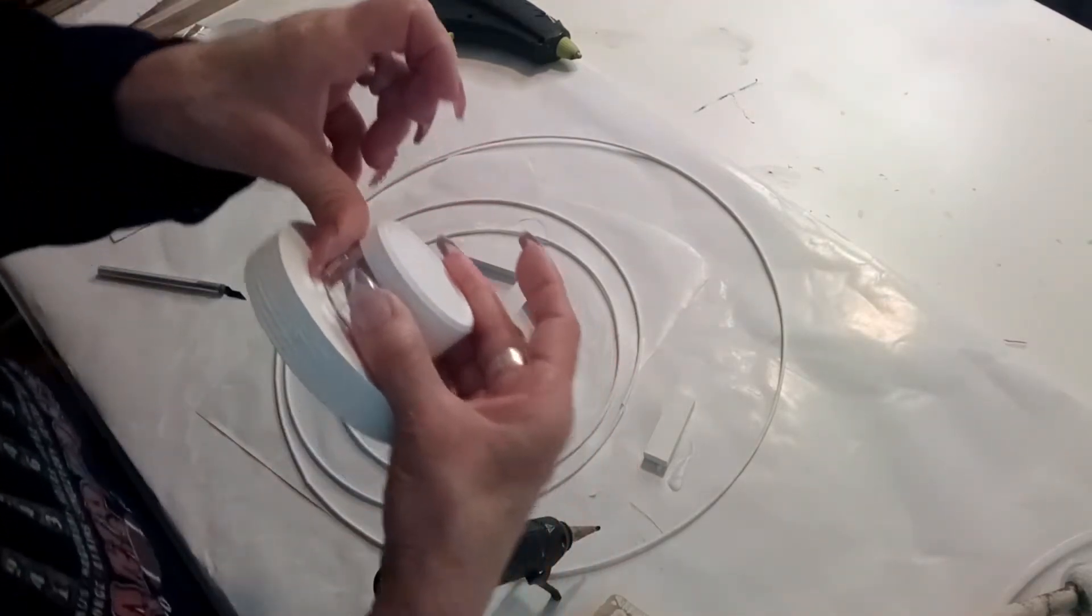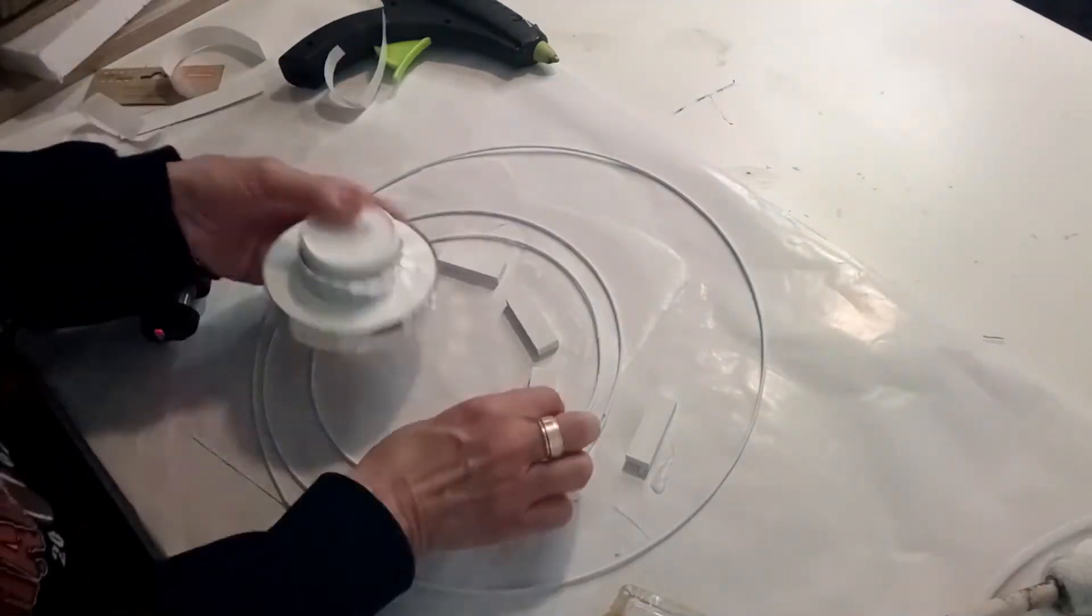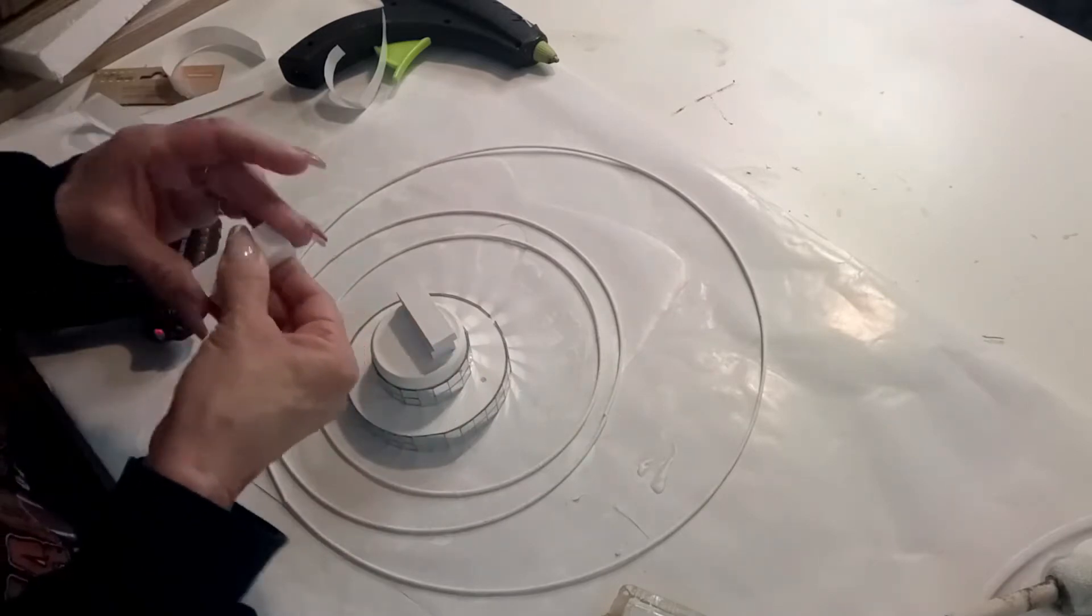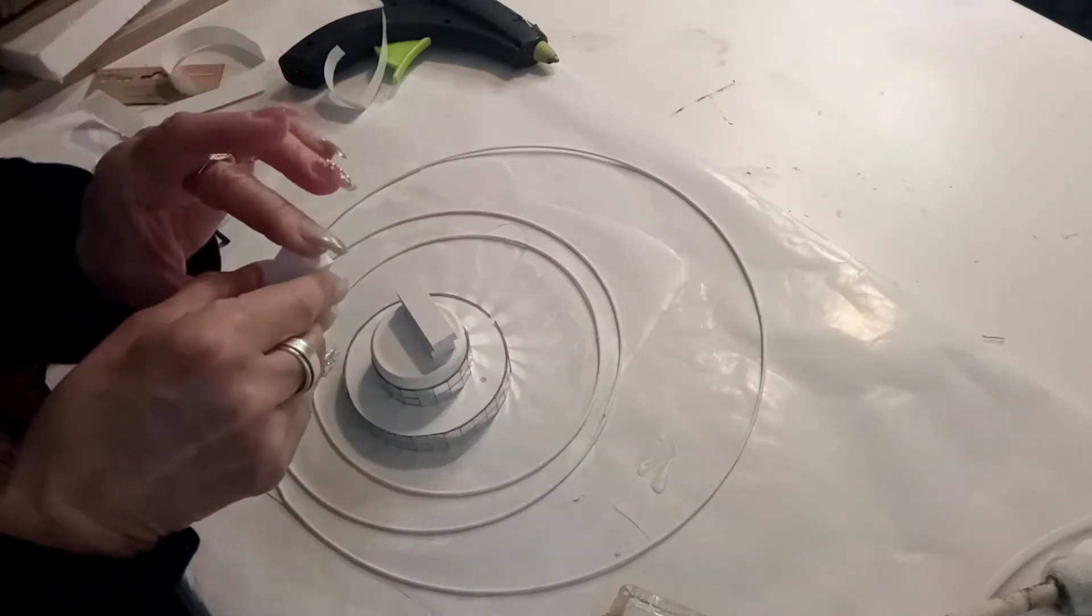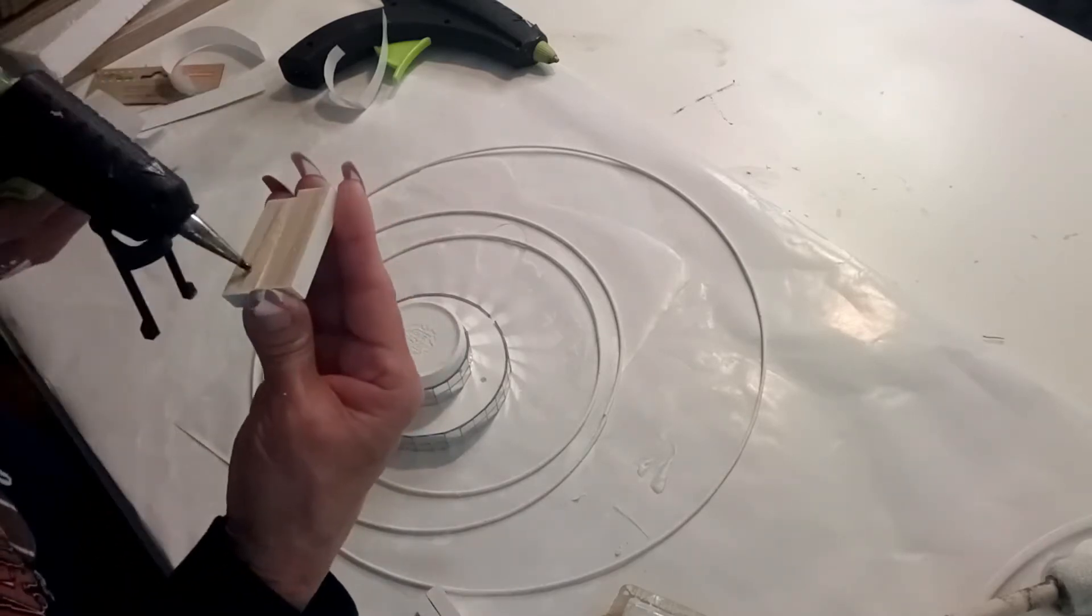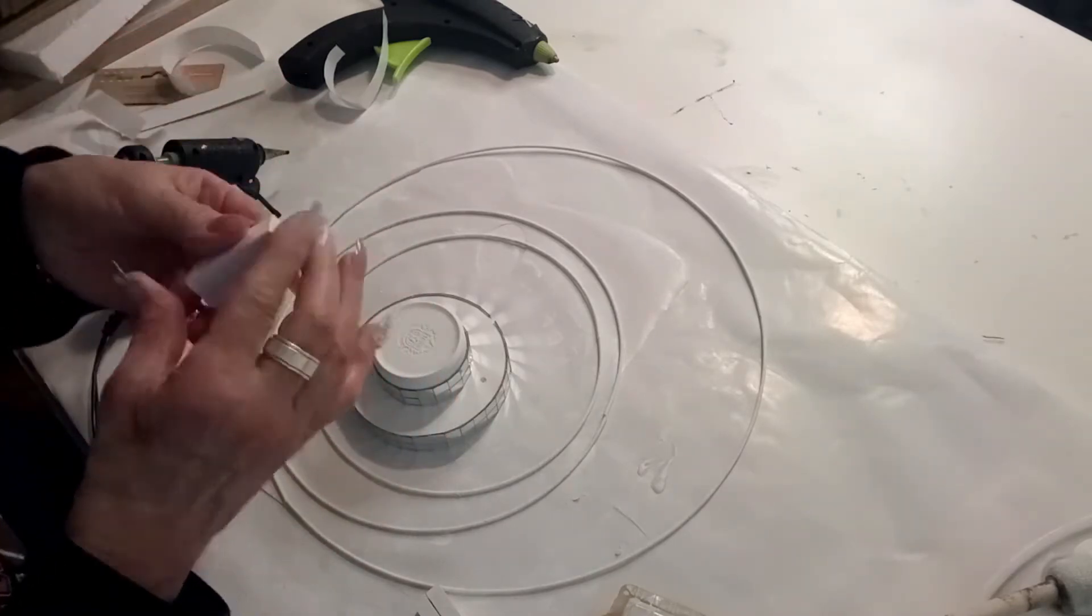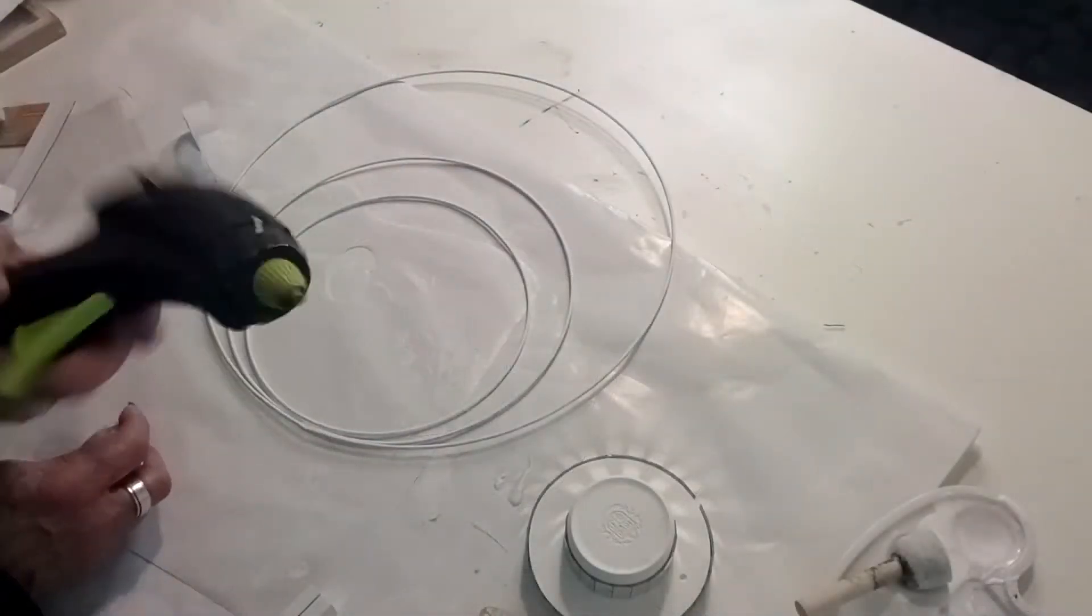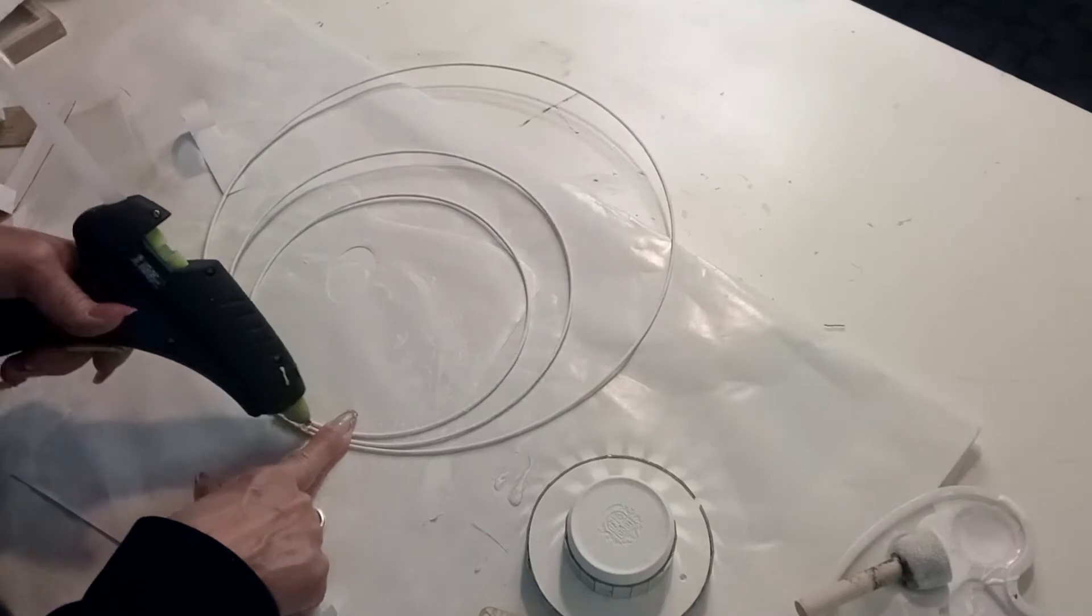So now I'm going to take the Jenga blocks and glue two and two. This is going to sandwich in the rings and that's what's going to hold it so it can stay standing up. You'll see, I hope I'm making sense. I'm also going to glue with hot glue all three together so they won't move.